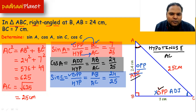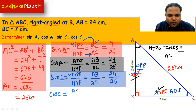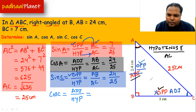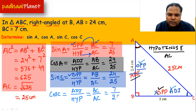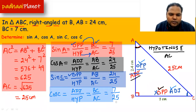Now let's find out the value of cos C. Cos C is equal to adjacent over hypotenuse. Since we are talking about angle C, this side is opposite and the adjacent side is BC. So that's BC over AC, and BC equals 7 and AC equals 25. So cos C equals 7 over 25.